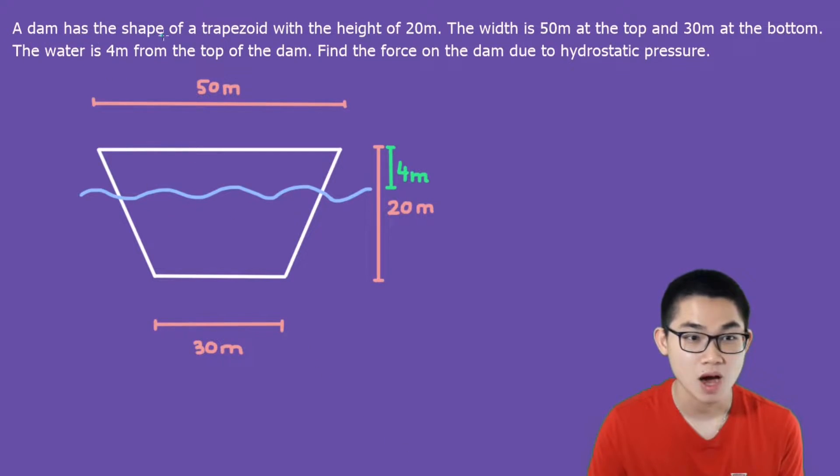a dam has the shape of a trapezoid with the height of 20 meters. The width is 50 meters at the top and 30 meters at the bottom. The water is 4 meters from the top of the dam. We have to find the force on the dam due to hydrostatic pressure.